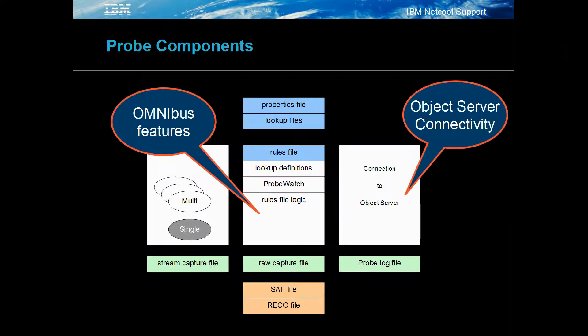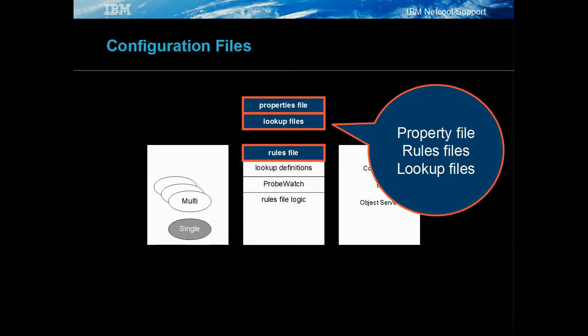The NetCall Omnibus core features provide common behaviour between the probes, based on event processing and object server connectivity. The main configuration files are the probe's property file, used to set the probe-specific and common features, and the probe rules files, which define how the dollar tokens are converted to the object server at tokens. The look-up files allow one or more fixed fields to be defined through a single field look-up.